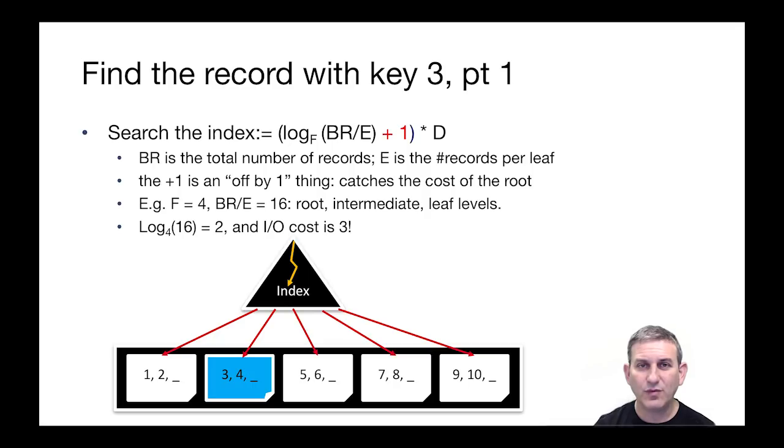So to find the record with key three, we're going to do two things. We're going to search the index and then walk to the heap file to get the data item. Searching the index should be something logarithmic, but let's look at the specific cost here. It's going to be log base F, because the internal fanout is F, of what? Of the number of leaf pages. The number of leaf pages is going to be the total number of records, BR, divided by E, the number of records per leaf. So the number of leaf pages is BR over E, and log base F is going to be over that.